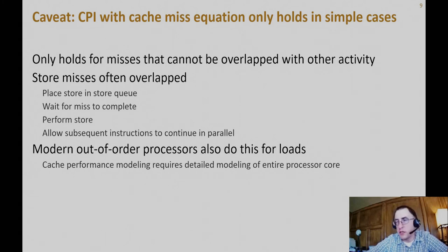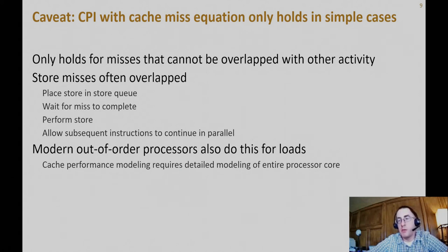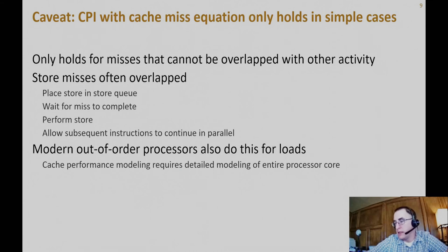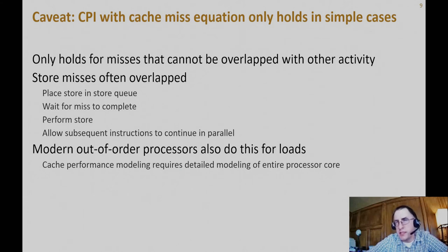In more advanced processor designs, you can no longer analytically describe or predict performance numbers by equation, because when you can overlap the miss penalty with useful work, you effectively hide that miss penalty. For example, if you have store buffers that can hide store misses and those buffers are never full, you never see a store miss penalty. If the buffer is full some of the time, you only see the penalty that often — adding another variable.